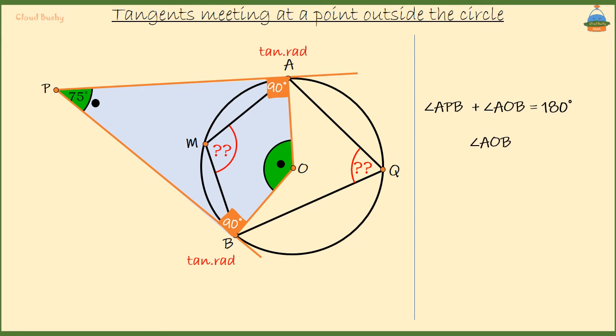That means AOB is equal to 180 minus 75 degrees, which is 105 degrees.